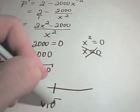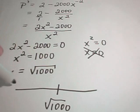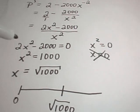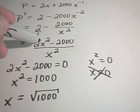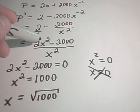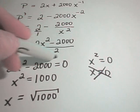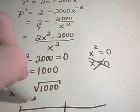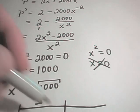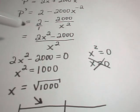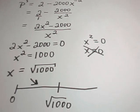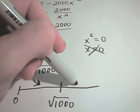Technically to check that this is a critical number, we should take a number smaller than square root of a thousand. If I plug 1 into my derivative, I'm going to get a negative number, and that means that the perimeter is decreasing up until this length. You can check that if you take something a little bit bigger than square root of a thousand, it's going to be positive, which means the perimeter then is getting bigger.